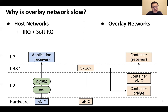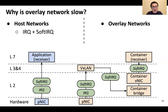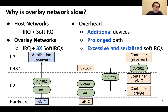However, packet processing in container overlay networks is a more complex pipeline that contains multiple network devices and stages. When the first software interrupt is being processed, the network stack will identify that this is an encapsulated overlay network packet, so it will do the decapsulation in the protocol stack to remove the outer header. Then it keeps moving the inner packet into the container bridge device and the container virtual NIC by raising the second and third software interrupts. Eventually the packet will be delivered to the target container application. So container overlay packet processing incurs one hardware interrupt and three software interrupts, triggered by different network devices separately.